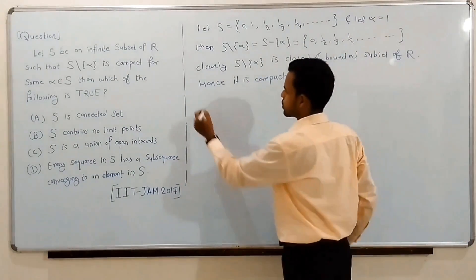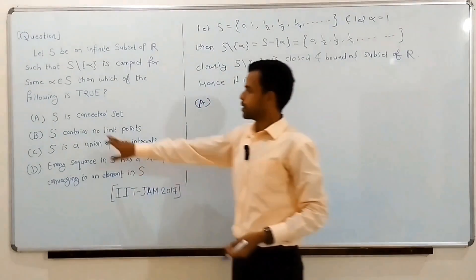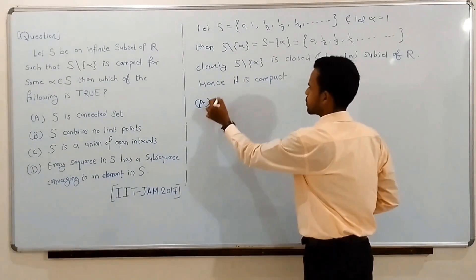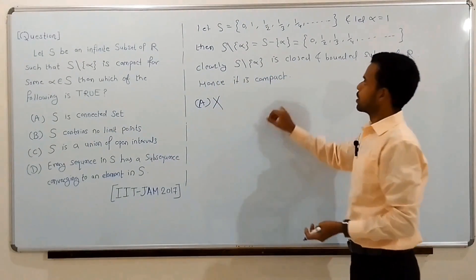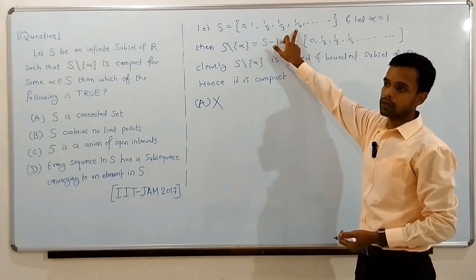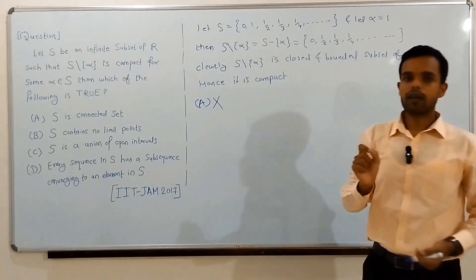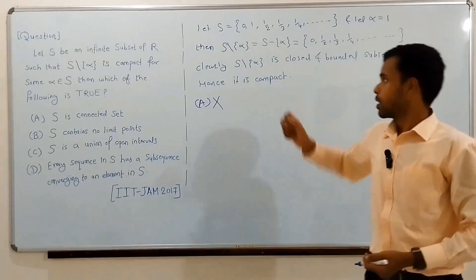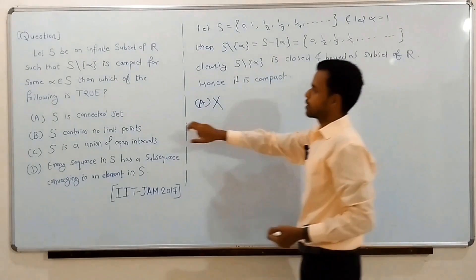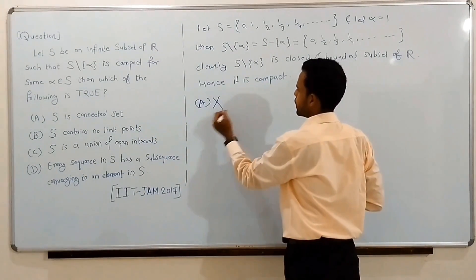Let us check the options. Option A states that S is a connected set, which is wrong. We know that the only connected subsets of R are intervals, and clearly S is not an interval. Thus S is not a connected subset of R, so option A is wrong.